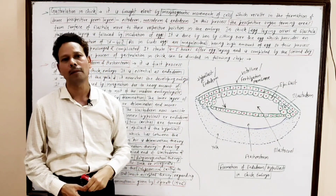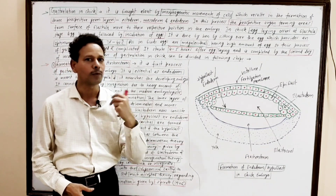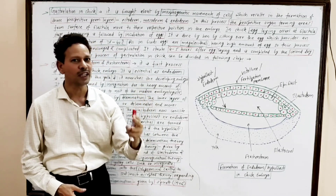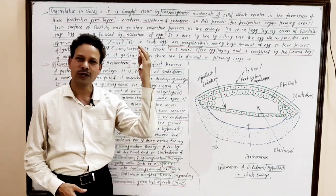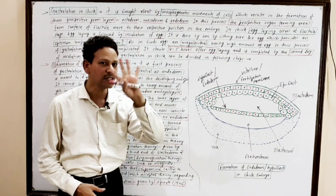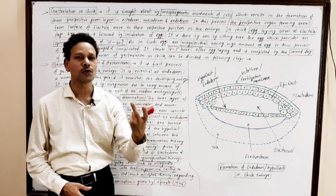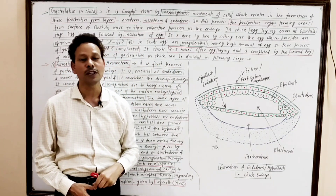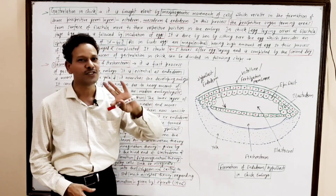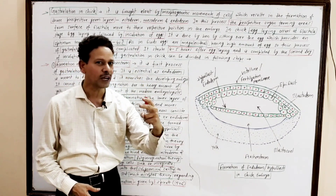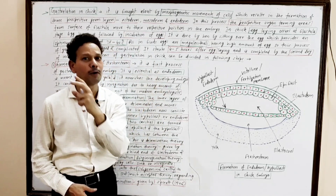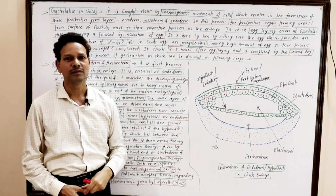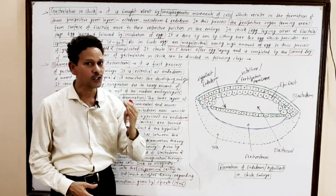Dear students, in this topic of developmental biology — development of chick — today I will cover gastrulation in chick. In our last topic, we discussed the process of blastulation and the blastula in case of chick, in case of birds, that is discoblastula. We also studied the fate map of blastula. In this lecture, I will cover gastrulation.